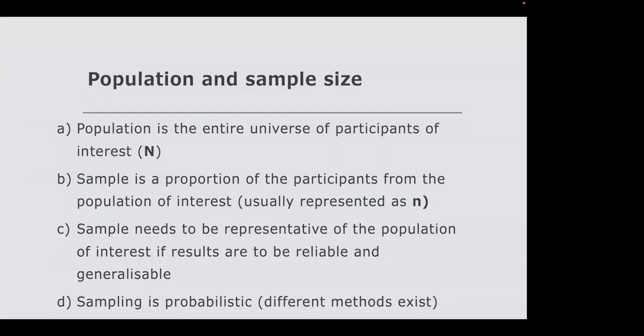Once you have your data type identified, you need to determine your sample size. You identify your population of interest and pick a sample — a small proportion of that population. Testing the entire population would be too expensive and time-consuming. Unless you are an institution with resources, it is more practical to use a sample. This is where secondary data becomes relevant — data that has already been collected by others.